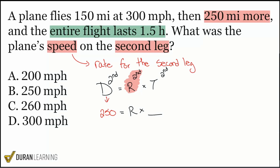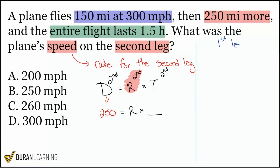Good. So now that we notice that, let's figure out a way to get that time. I have the whole trip time, and I also have the first leg: 150 miles at 300 miles per hour. I have distance and rate, so I can find time. Let me set up a working area in blue for the first leg: 150 miles equals 300 miles per hour times time. Divide both sides by 300 to get time by itself.